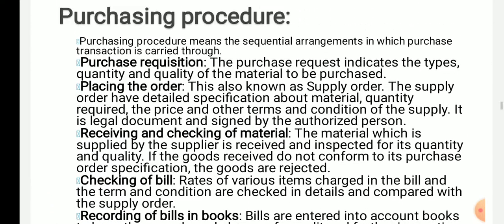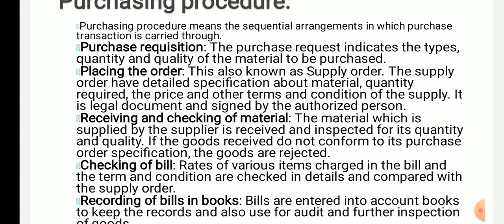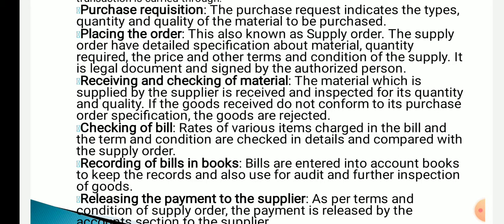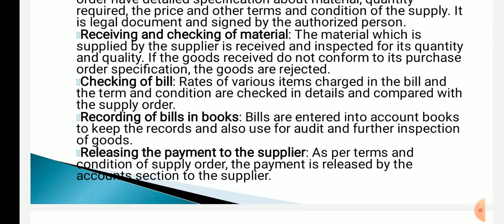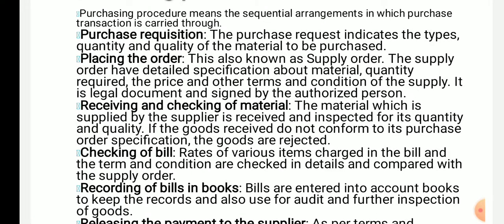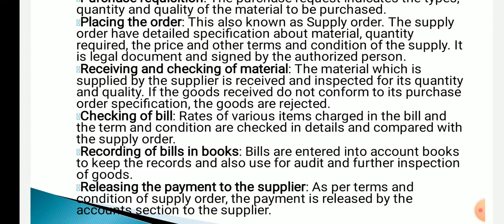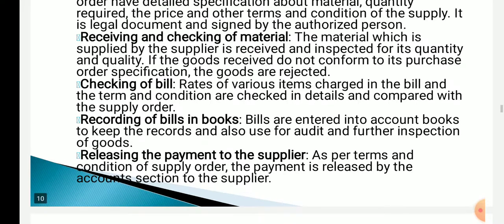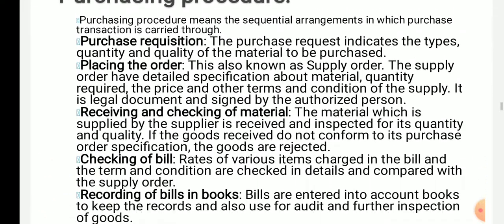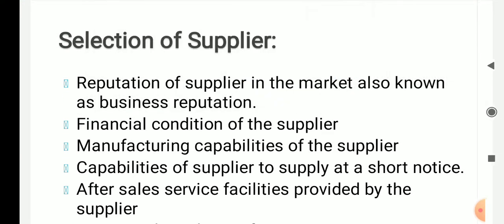To summarize the purchase procedure: first step is purchase requisition; second step is placing the order; third is receiving and checking of material; fourth is checking of bill; fifth is recording of bills in the books; and last is releasing the payment.